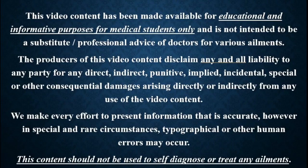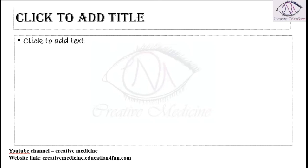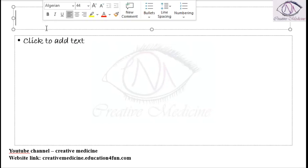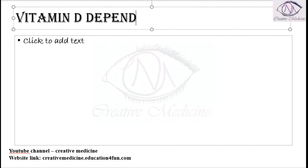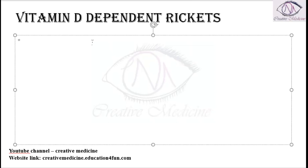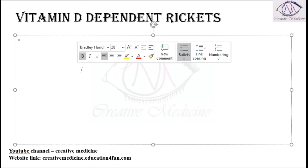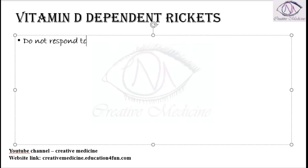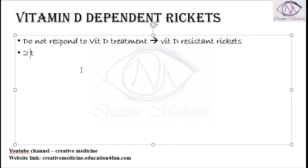In this lecture we will learn about Vitamin D Dependent Rickets. Vitamin D Dependent Rickets do not respond to vitamin D therapy and are therefore considered types of Vitamin D Resistant Rickets. There are two types: Vitamin D Dependent Rickets Type 1 and Vitamin D Dependent Rickets Type 2.